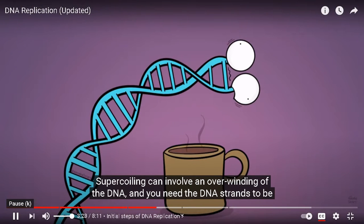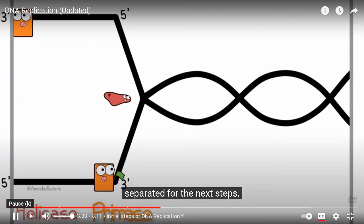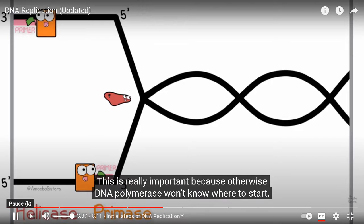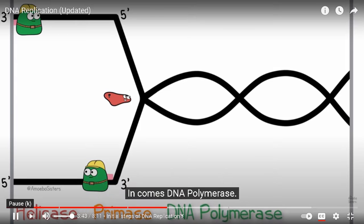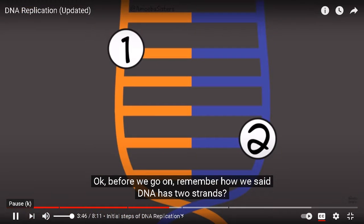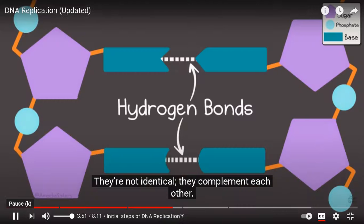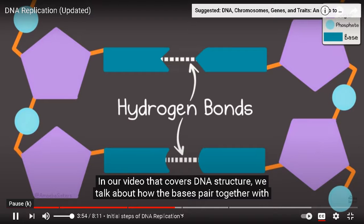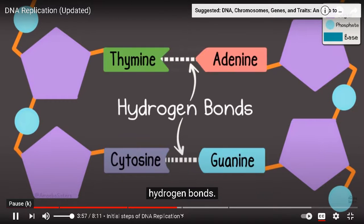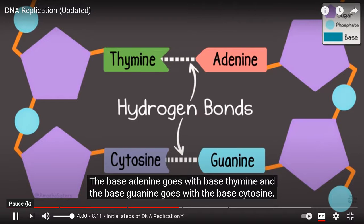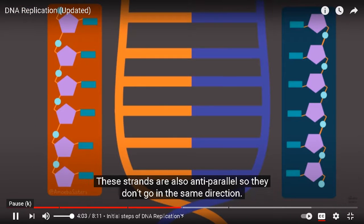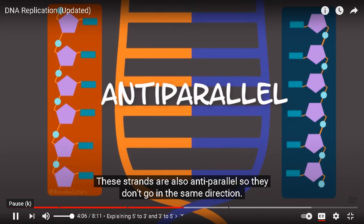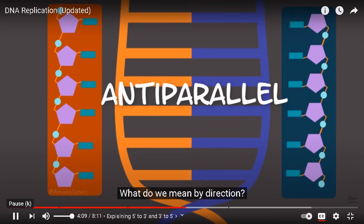Primase comes in and makes RNA primers on both strands — this is really important because otherwise DNA polymerase won't know where to start. Then DNA polymerase builds the new strands. Remember how DNA has two strands? They're not identical, they complement each other. The base adenine pairs with thymine, and guanine pairs with cytosine. These strands are also anti-parallel, so they don't go in the same direction.